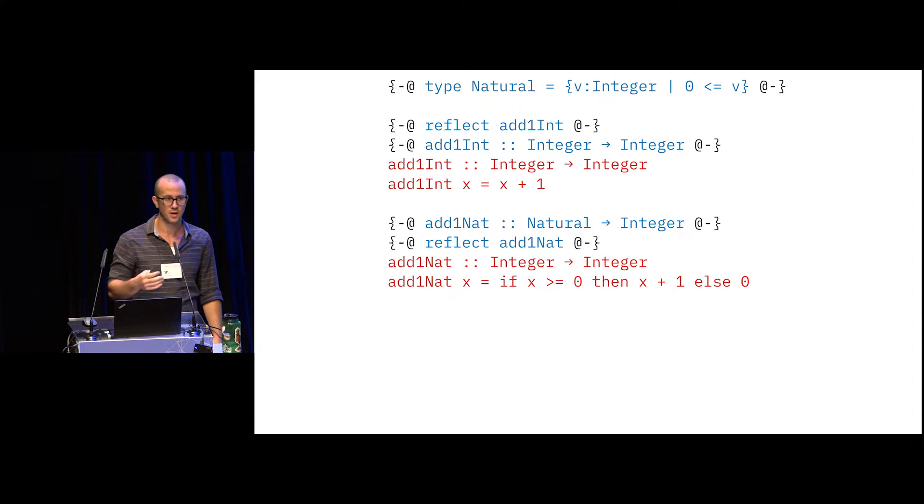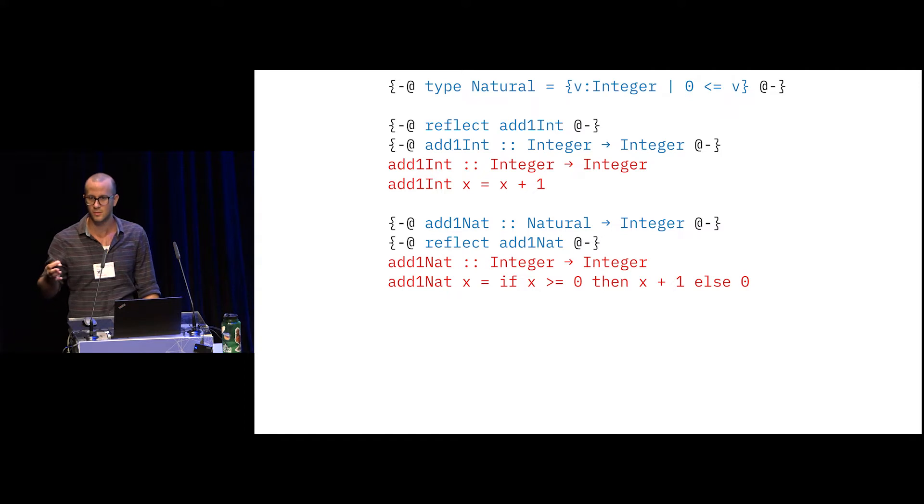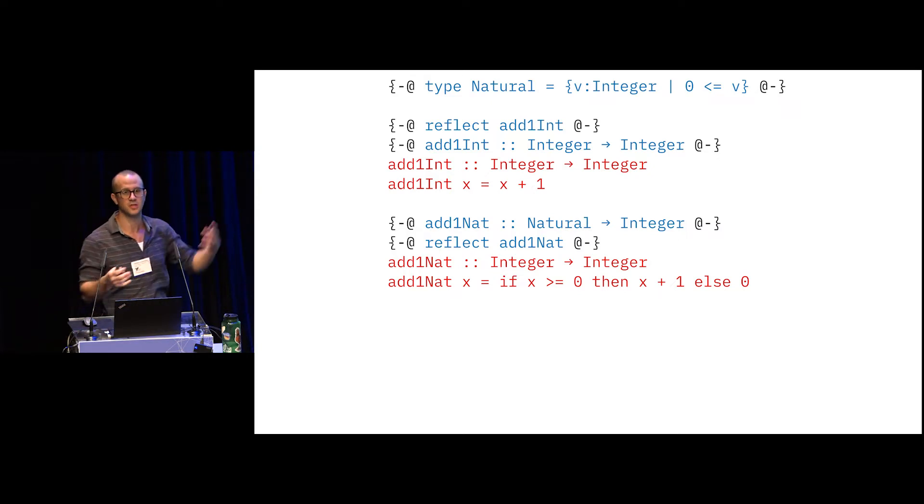So what are my goals for this talk? I think it's very important to set reasonable goals. I'd like to prove these programs equivalent and some ones related to them. So what's happening here? Well, we have a type of naturals. And we have two addition functions. One is a classic addition function. Add one int. It adds one to an int. And then there's add one nat. And it conditionally adds one to a nat.